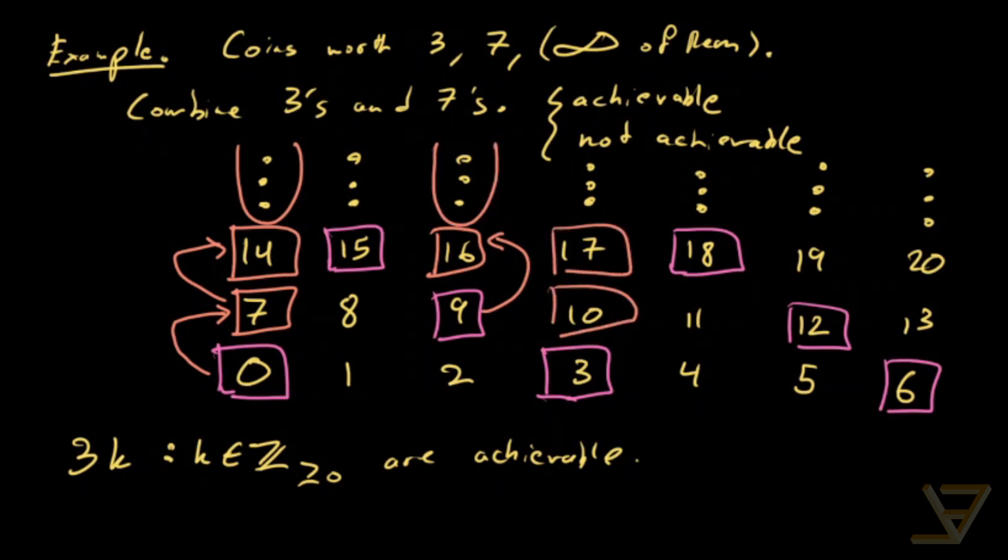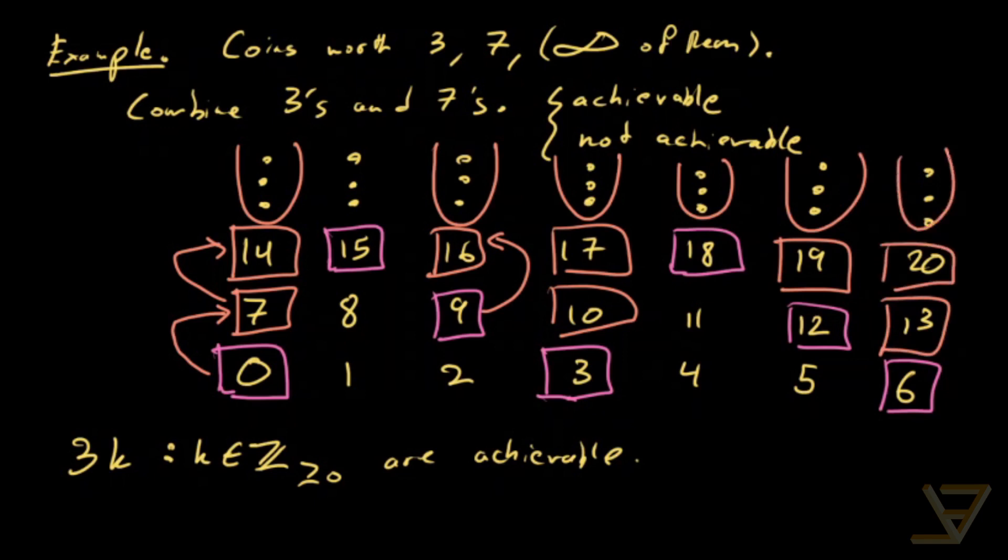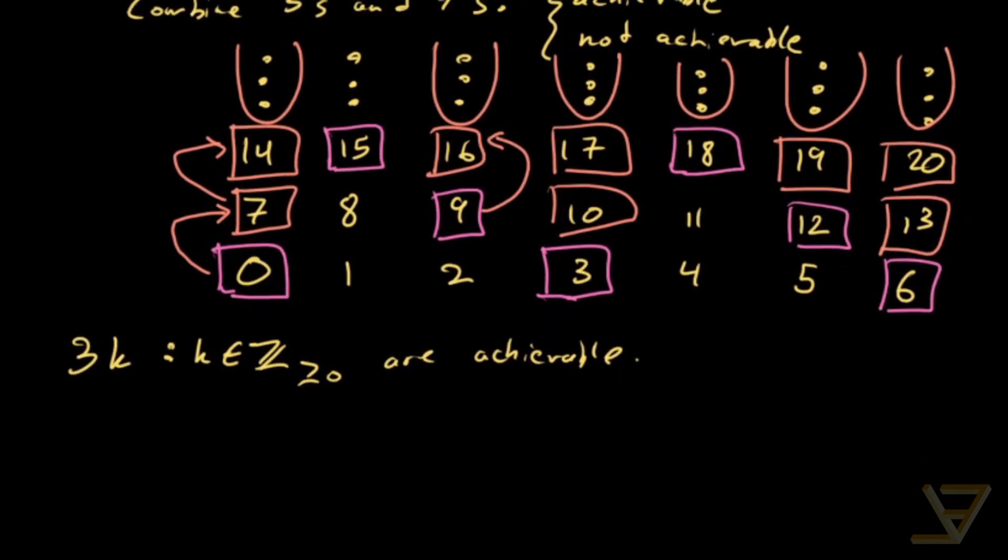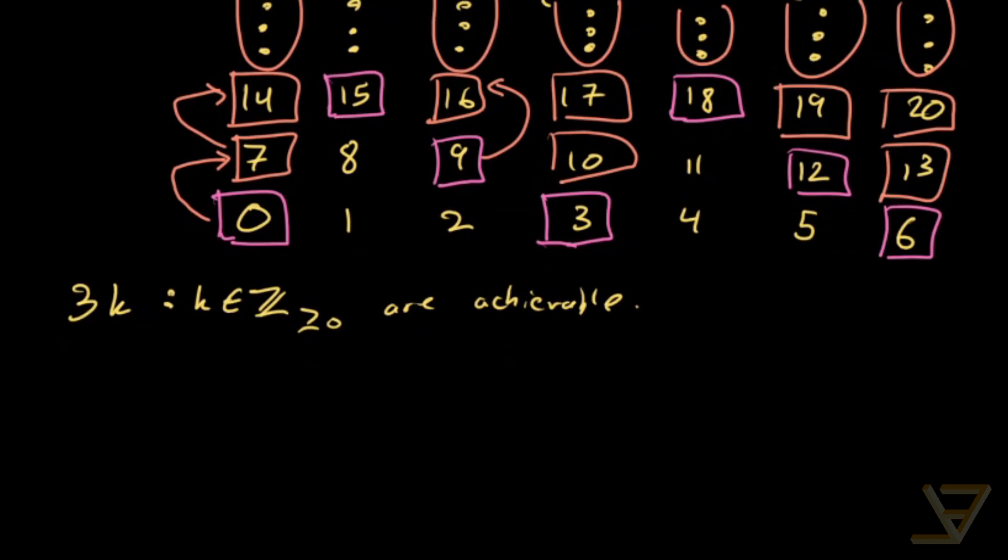These two are achievable, and above that is done. Above this is good. This is achievable, and above that is good. These two are good, and above that is good. So we're not left with a whole lot of possibilities.